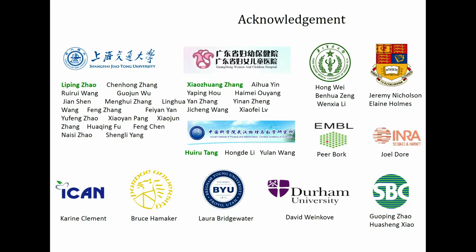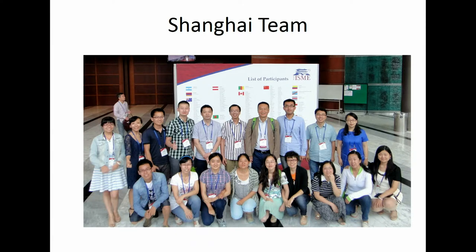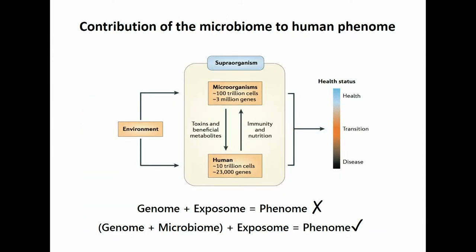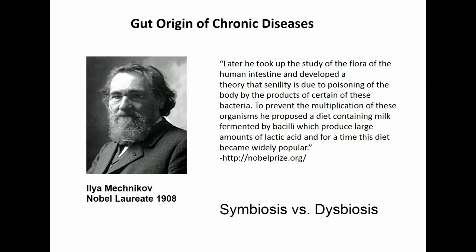I would like to thank my team, particularly in Shanghai, and also my collaborators and funding agencies. We know now gut microbiota can contribute to our phenotypes in disease or health, because when they grow in our gut, they produce various bioactive compounds which can get into our bloodstream, circulate, and regulate our genes, impact our immunity, and modulate our metabolism. More than 100 years ago, Professor Metchnikov already proposed that toxic compounds produced by gut microbiota may be driving aging and aging-related diseases.